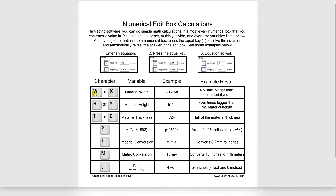If you use the W or the X key, that would be your material width. If you use H or Y, that will be your material height — for example, if your height was 5 inches and you did H times 4, that would equal 20. For thickness, you can use the letter T or Z. For the PI symbol, use the letter P. To convert metric to imperial use the letter I, imperial to metric use the letter M, and for feet use the apostrophe.